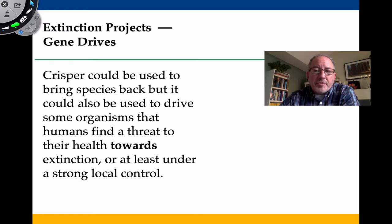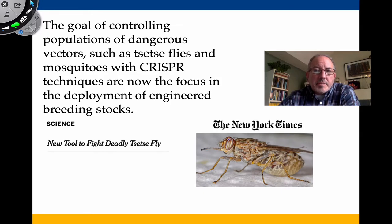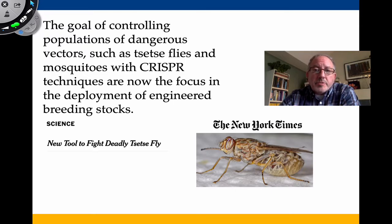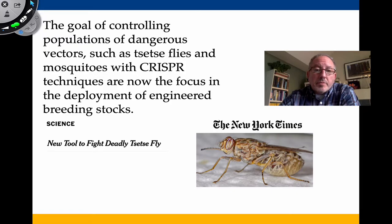The goal is controlling populations of extremely dangerous vectors, such as the tsetse fly that causes sleeping disease and certain species of mosquito that cause malaria. Currently over a million people die annually of malaria alone. Scientists are working toward reducing those mosquito populations through engineering, and new tools are being developed.